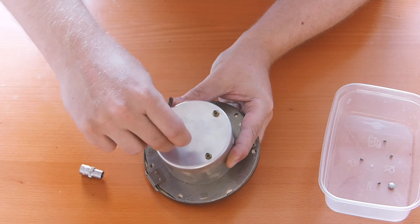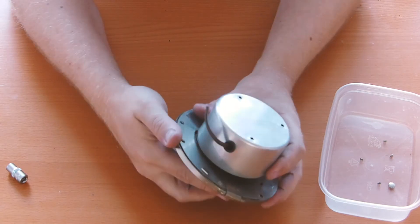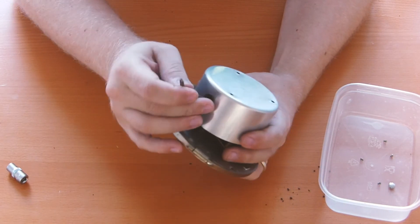And that just really unscrewed relatively easily just taking these bolts off the back here, didn't really take much effort. And then the silver casing came straight off.